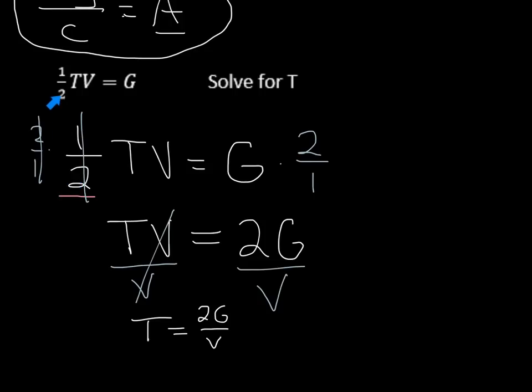So when you have a fraction in your original problem, make sure you just take care of it right away. Multiply both sides by the reciprocal, which is two over one, and that will clear that fraction for you, and then you can just divide both sides by whatever's closest to it. You'll see some similar ones like this in the homework and also in class.